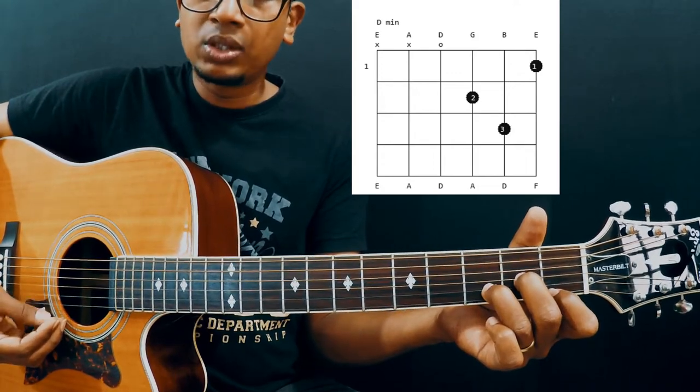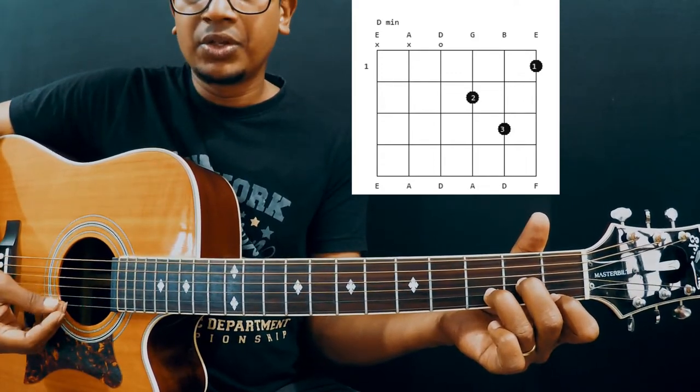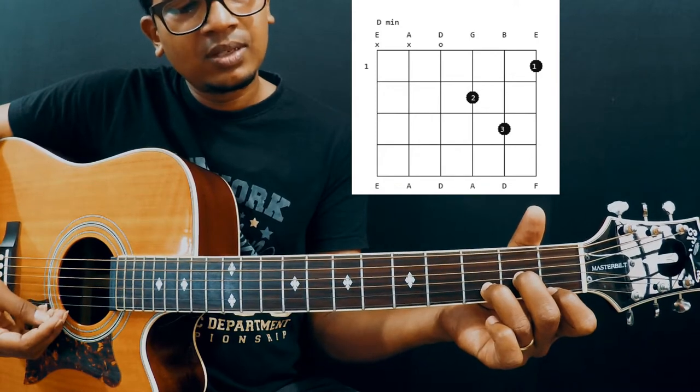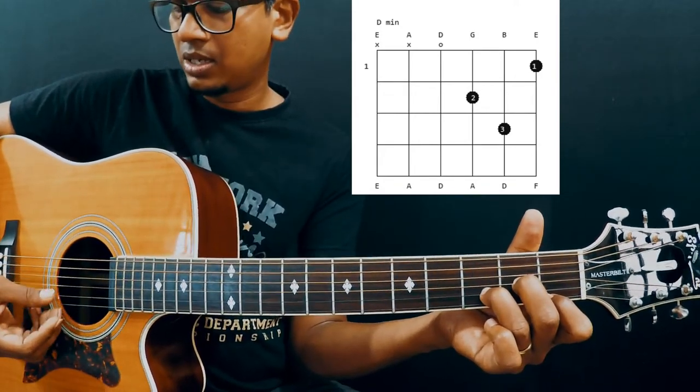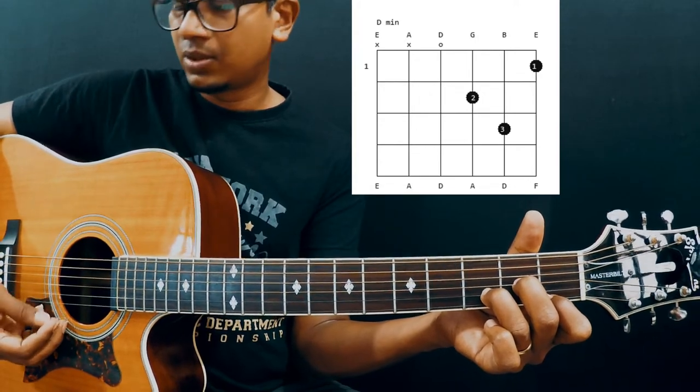Sometimes you may mute the 1st string with your ring finger. So just tilt a little bit upward so that you get the clean sound.